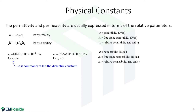We can do the same thing for the magnetic response of a material — this is called the permeability, a measure of how much the magnetic fields interact with the medium. We write it as the product of the free space permeability times the relative permeability. It's much rarer to discuss relative permeability because most materials don't have any magnetic response, so the relative permeability is just 1. For what we're doing — simulating transmission lines — we'll work almost exclusively with the relative permittivity, the dielectric constant.